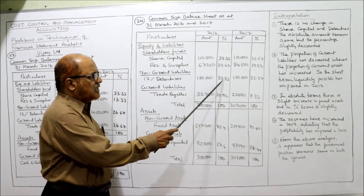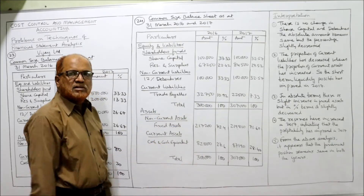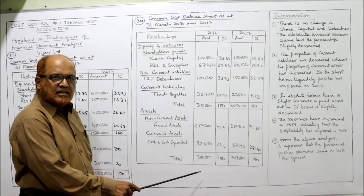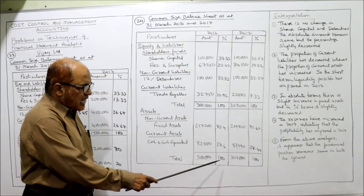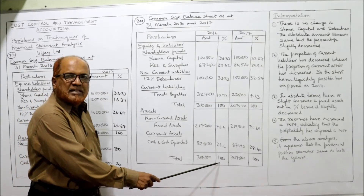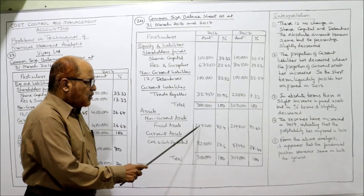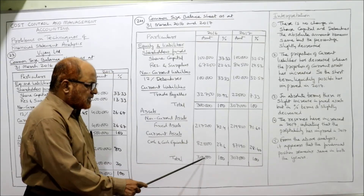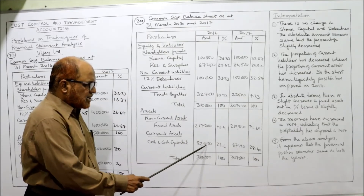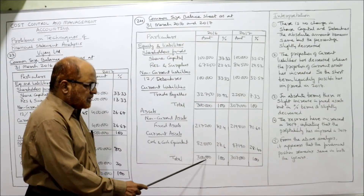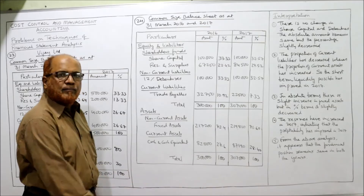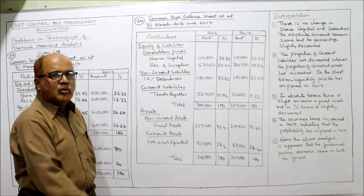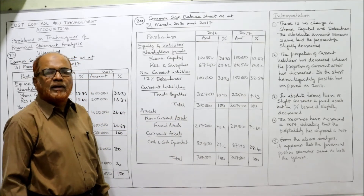Like this you get the percentages for each item. Same way for assets: the total of assets — 3 lakh — will be taken as the base at 100%. Then 2 lakh 17,200 divided by 3 lakh into 100, and 82,800 divided by 3 lakh into 100. The same procedure you follow for 2017 current year.